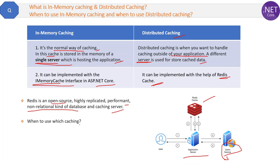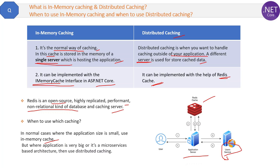When deciding which type of caching to use: for normal scenarios where the application size is small, use in-memory cache, because maintaining a separate server for caching can be overhead, complex, and expensive for a simple application. But where the application size is very large and it uses a microservices-based architecture, prefer distributed caching.